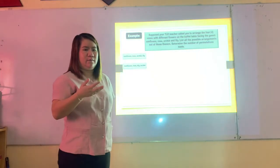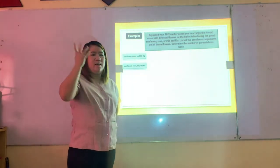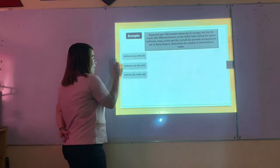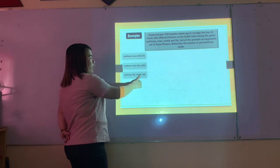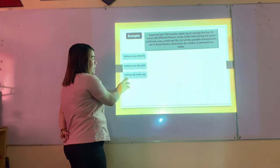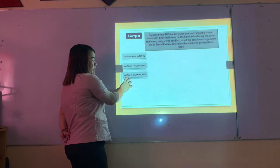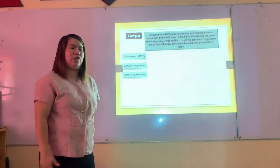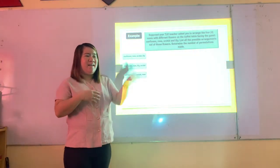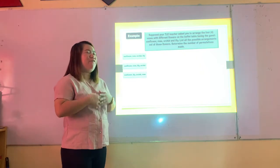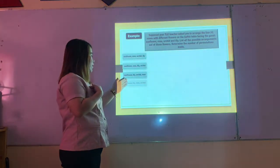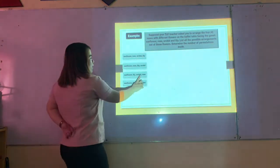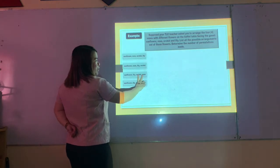Third arrangement: sunflower, baby's breath, orchid, rose — sunflower is still first, now followed by baby's breath. Fourth arrangement: sunflower, baby's breath, rose, orchid — orchid and rose switch position.